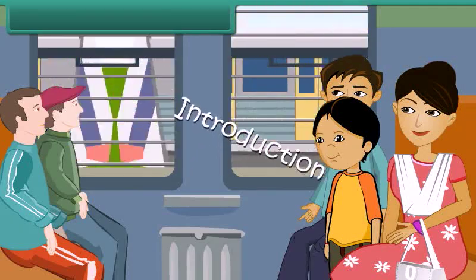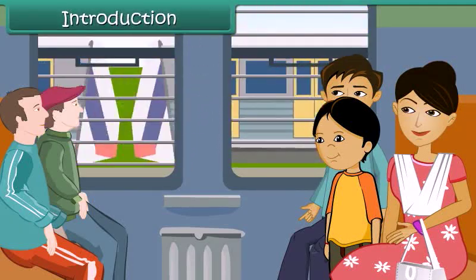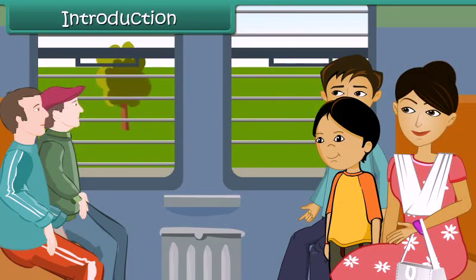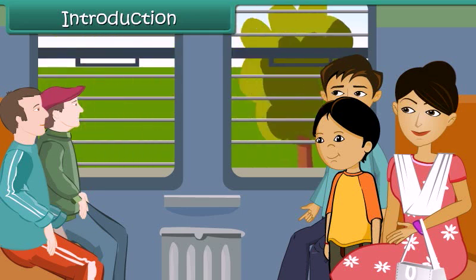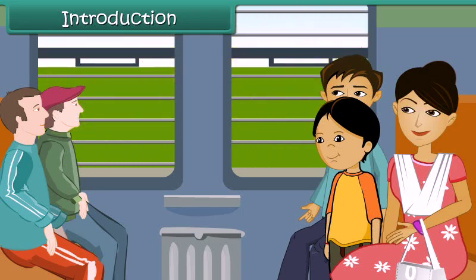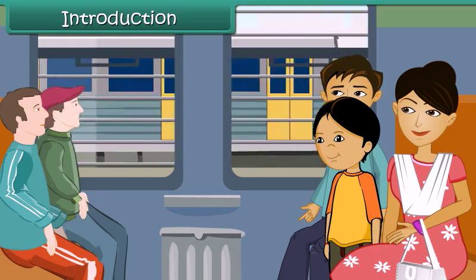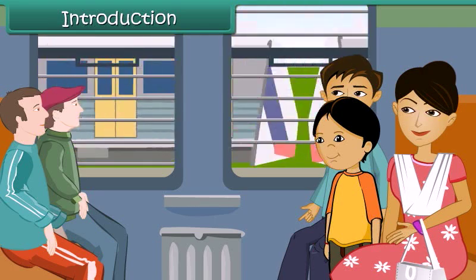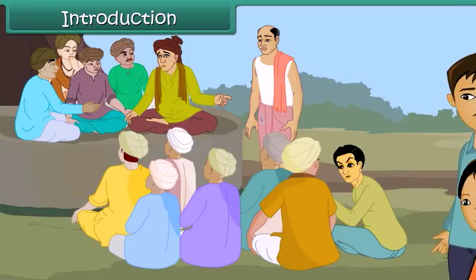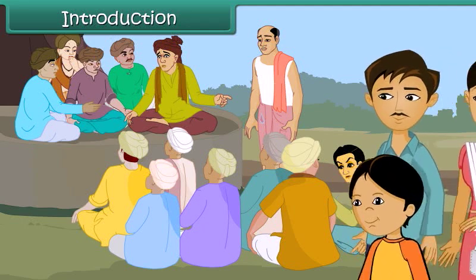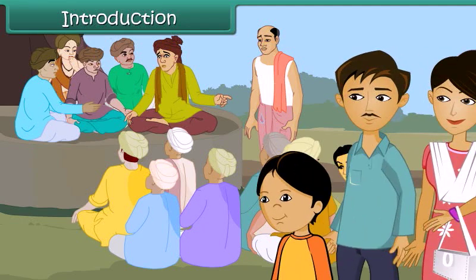Bari lives in a city with her parents. She is going to a village for summer vacations where her grandparents live. This is the first time she is visiting an Indian village. On the way from the railway station to her grandparents' house, she finds a group of five elderly people sitting under a banyan tree, listening to some men standing in front of them.